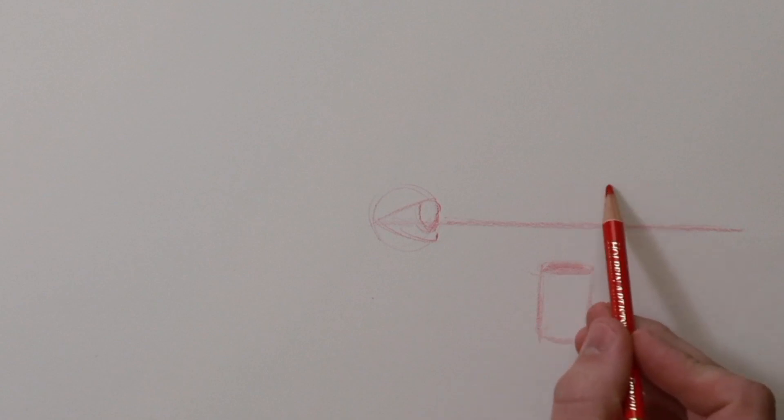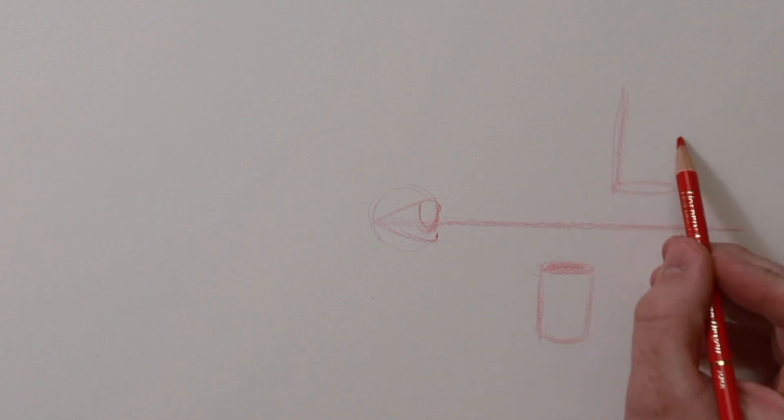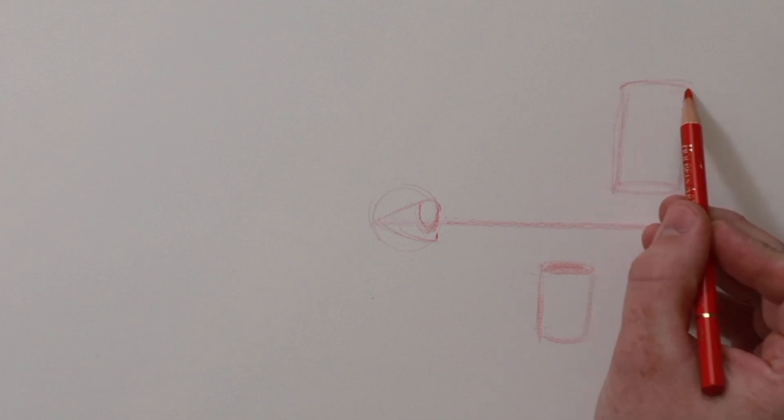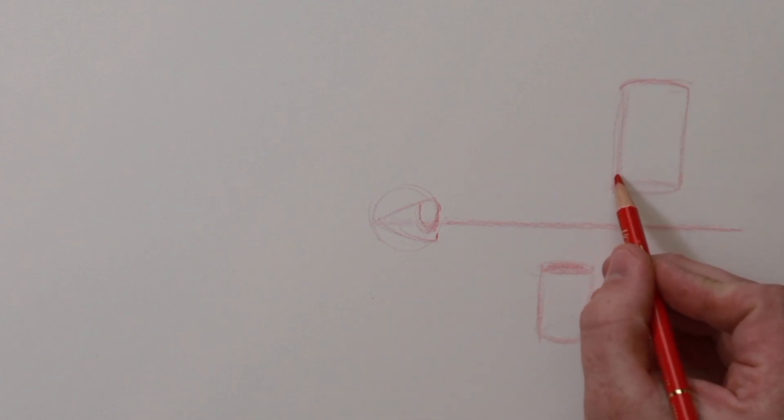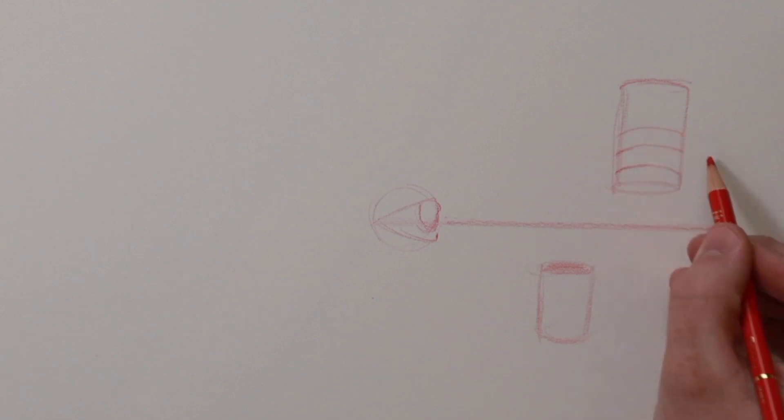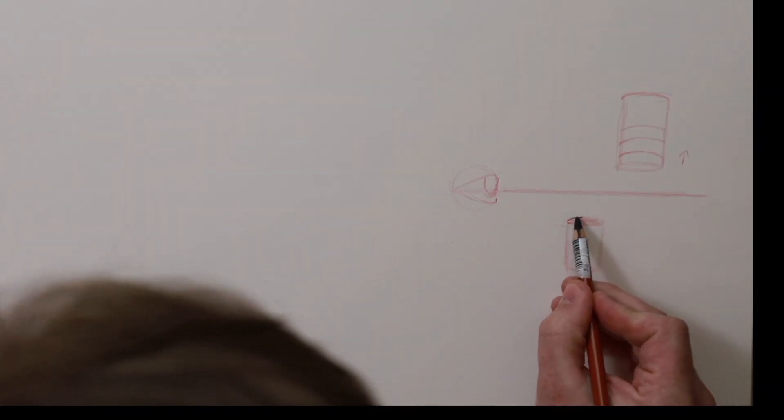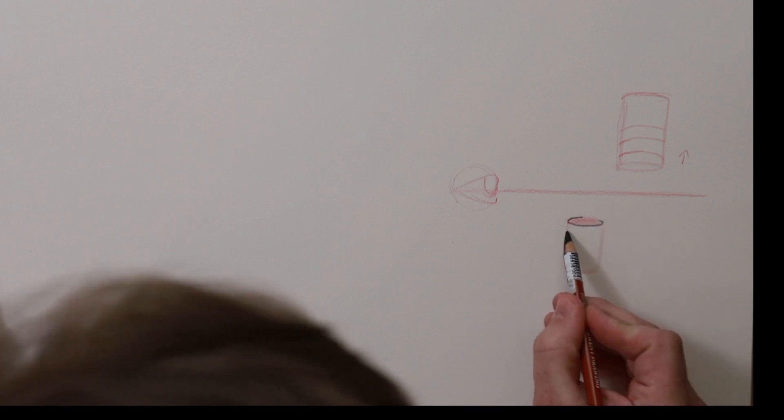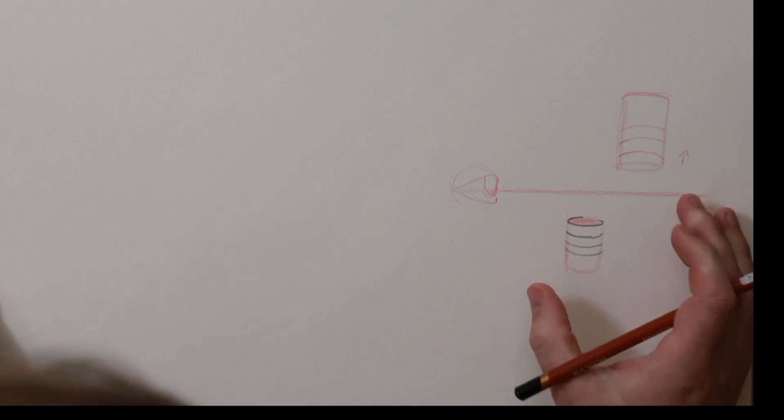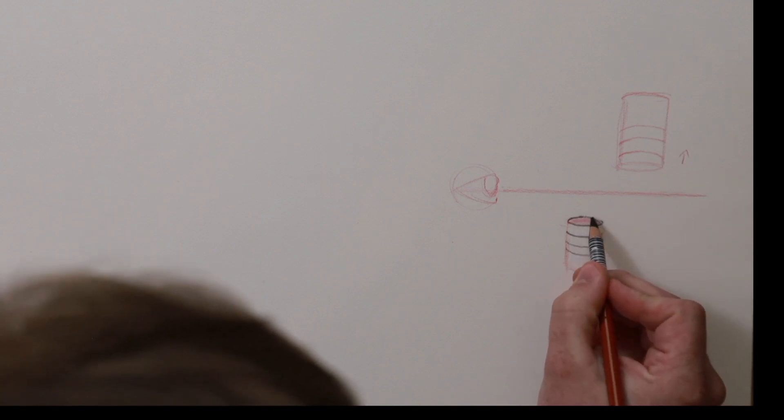If you have a cylinder that's above the horizon line or your eye level, then you're going to see the bottom of it. If there are lines on this or if you're going to render it with ellipses, then all those ellipses are going to curve up. Whereas these ellipses down here, they're going to curve down. This is really important, this is sort of the fundamentals for drawing a cylinder.